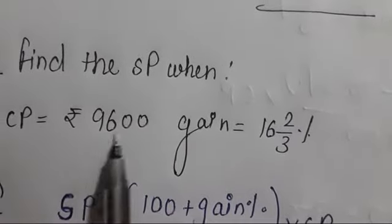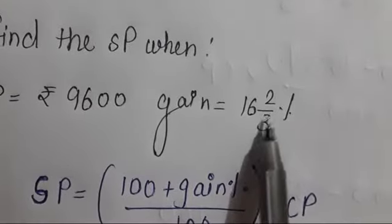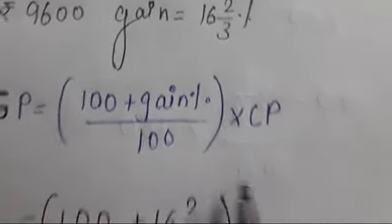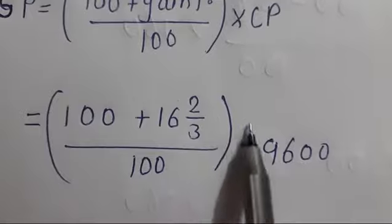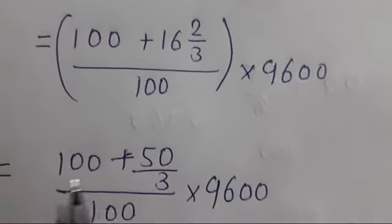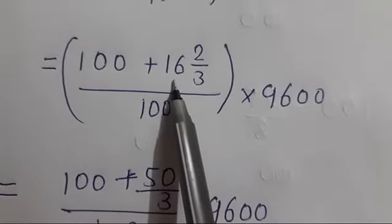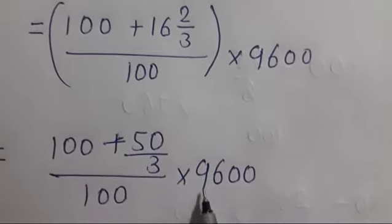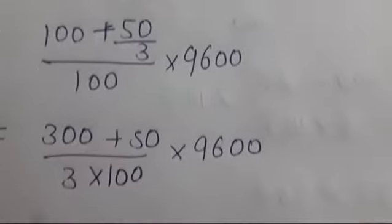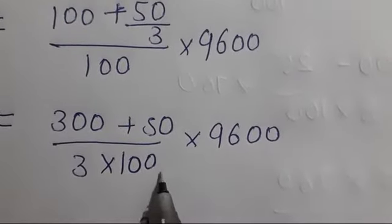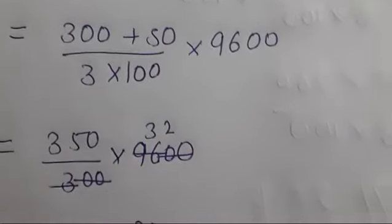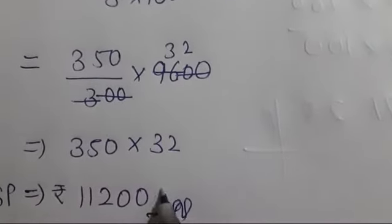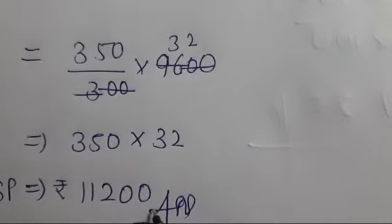Find the SP when CP equals 9600 and gain is 16⅔ percent. SP equals (100 plus gain percent) upon 100 times CP. This gives (100 plus 16⅔) upon 100 times 9600. Converting 16⅔ to 50/3, we get (300 plus 50) upon 3 times 100 times 9600. So 350 upon 300 times 9600. After canceling, 350 times 32. The answer is 11,200.